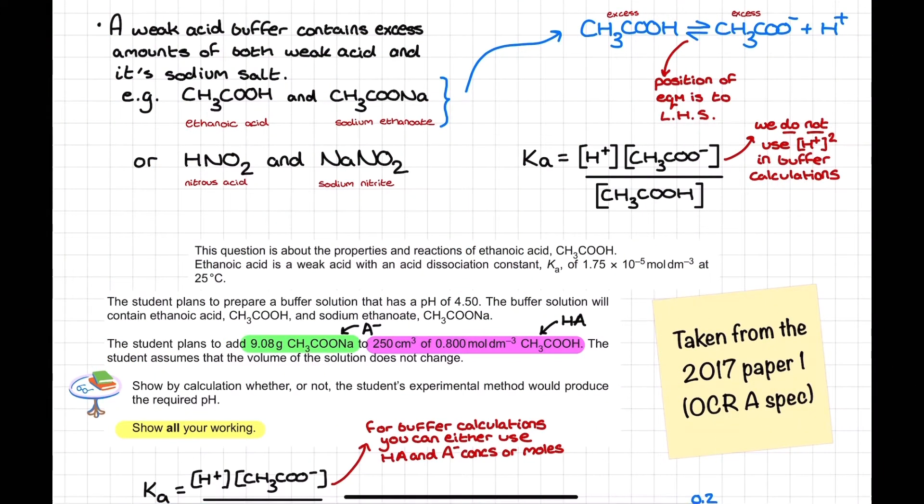So here what we have are two common examples of weak acids that have come up quite regularly in OCR examinations. We've got ethanoic acid and nitrous acid. A weak acid buffer contains excess amounts of both weak acid and its sodium salt. So not just any sodium salt, the sodium salt of the weak acid. For instance, ethanoic acid has the sodium salt of sodium ethanoate that contains the carboxylate ion ethanoate, which you'll recognize from module 6 if you've done that yet. Another example of a weak acid that's come up twice in OCR exams is nitrous acid. The sodium salt of nitrous acid, you wouldn't be expected to know the name of this, but if they used it in an exam paper question it wouldn't be too shocking: sodium nitrite. But we don't use nitrite very often at A-level at all.